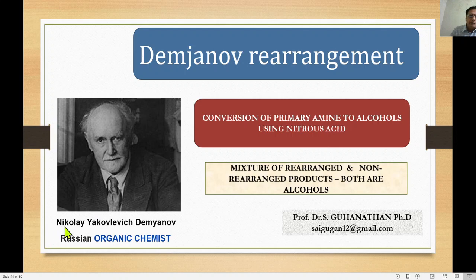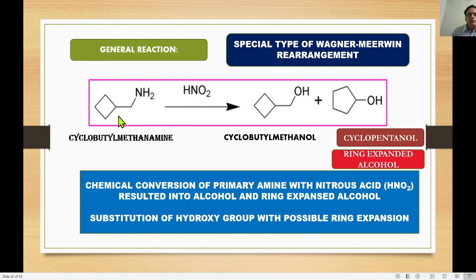Demjanov was an Armenian organic chemist who suggested and produced the conversion of primary amines into alcohols using nitrous acid. This reaction is named after him as the Demjanov rearrangement. It is a special type of 1,2-migration rearrangement reaction.